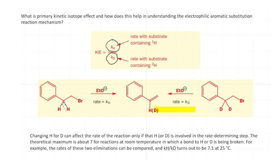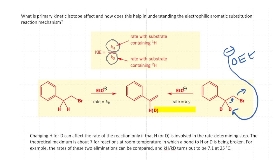Similarly, we replace both hydrogens by deuterium. Under the same conditions, we measure the rate and determine the rate constant, with the product now having deuterium in place of hydrogen. If the carbon-hydrogen bond breaking is involved in the rate-determining step, then we expect the hydrogen-bearing compound reacts substantially faster than the deuterium-bearing compound.